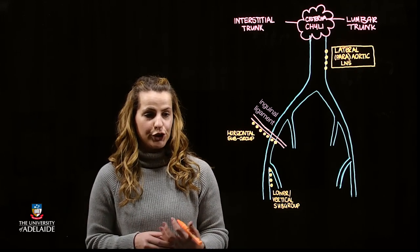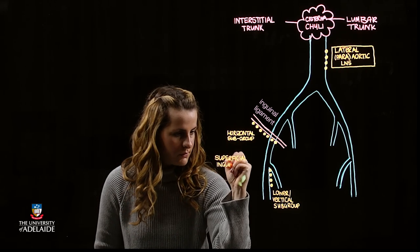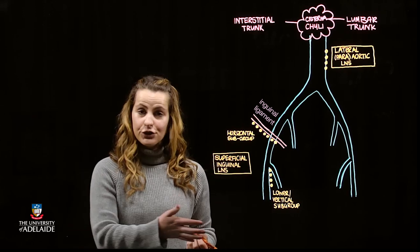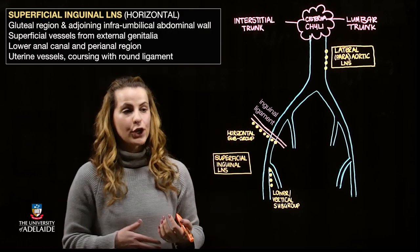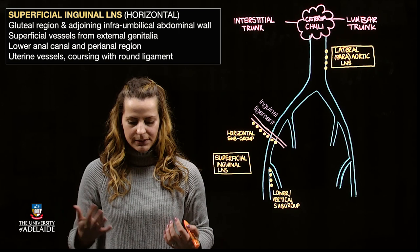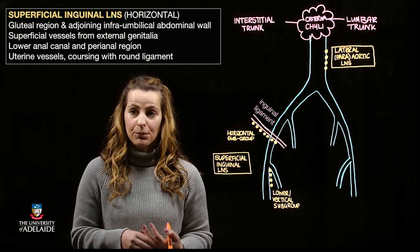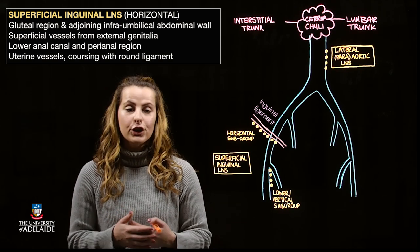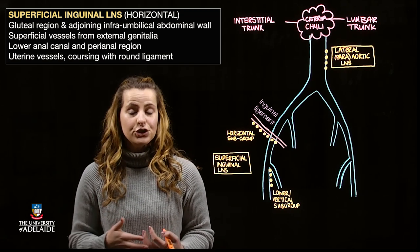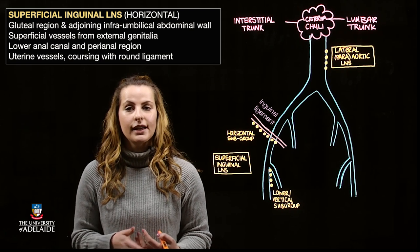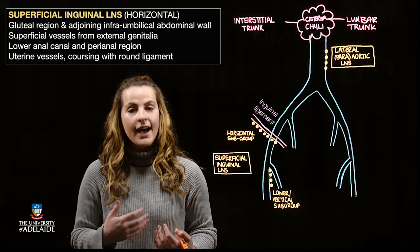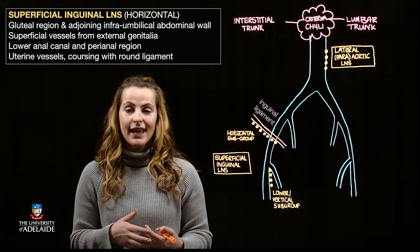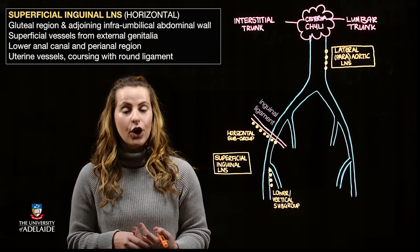When talking about the superficial inguinal group, the lymph nodes on the lateral aspect of the horizontal subgroup are going to be draining the gluteal region, as well as the adjoining part of the abdominal wall just inferior to the umbilicus. In contrast, the medial lymph nodes will receive afferent drainage from the superficial vessels of the external genitalia, including the vagina just inferior to the hymen, the lower anal canal and perianal region, as well as uterine lymph vessels located in relation to the round ligament of the uterus.